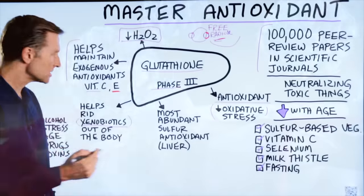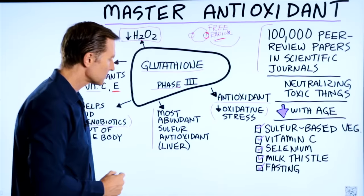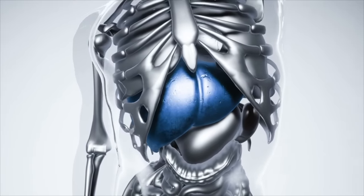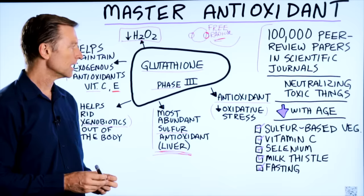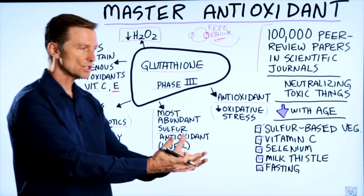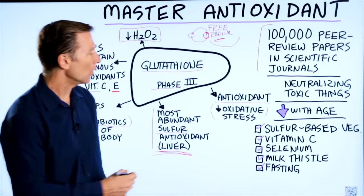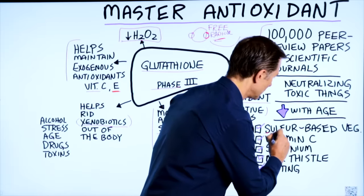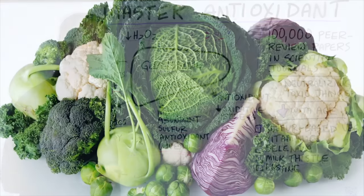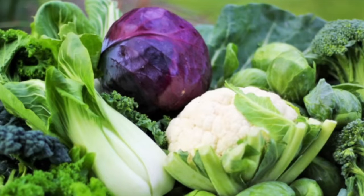It's the most abundant sulfur antioxidant. All your cells make it, but it's primarily most concentrated in the liver. Because of the sulfur component, if you consume certain foods that are higher in sulfur, you'll give your body the raw material to make more glutathione. Take a wild guess what the sulfur-based vegetables are — you guessed it, cruciferous. So eating cruciferous vegetables will help you with this.